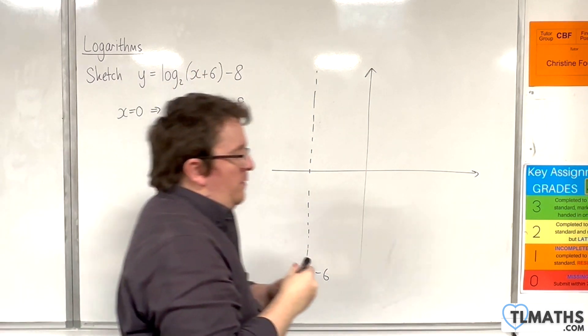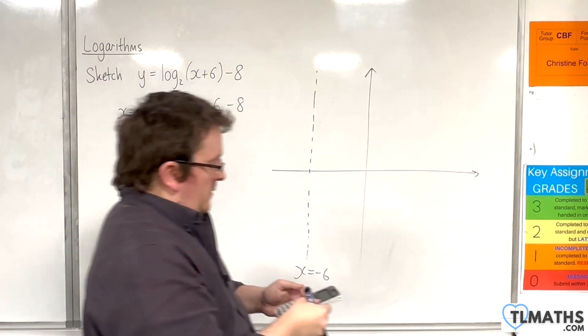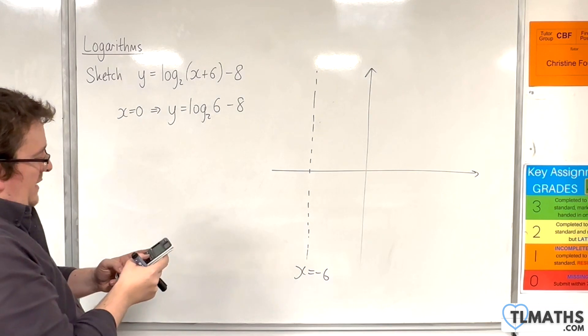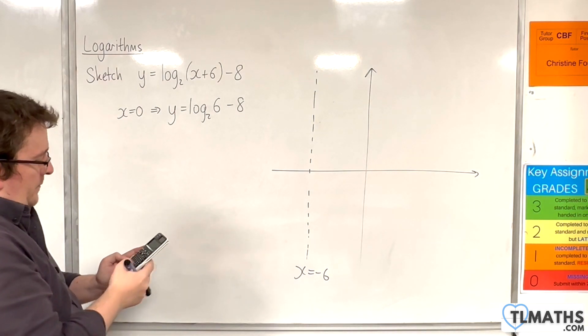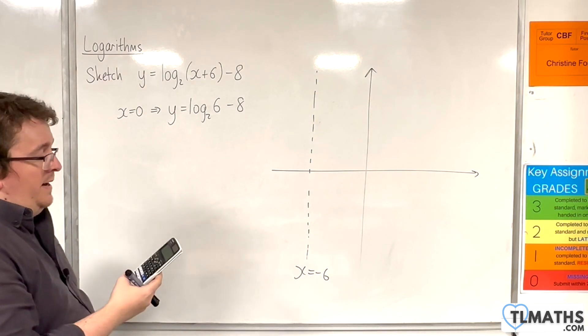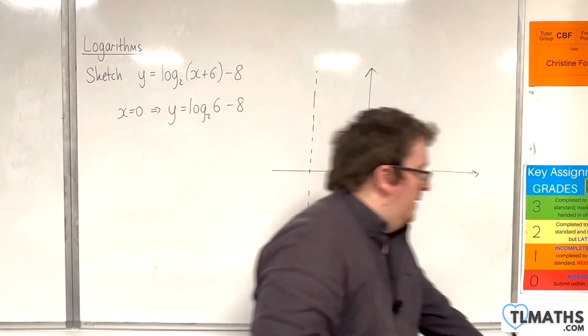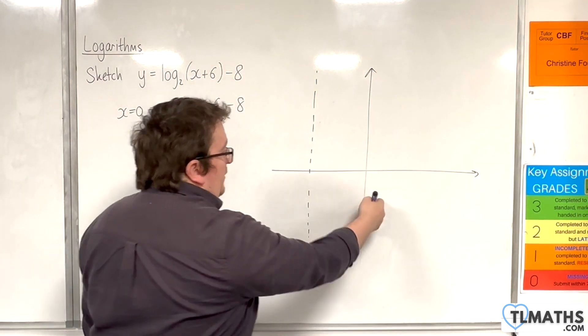So that's when x is 0. So log base 2 of 6, take away 8, is minus 5.41. So that means it crosses down here.